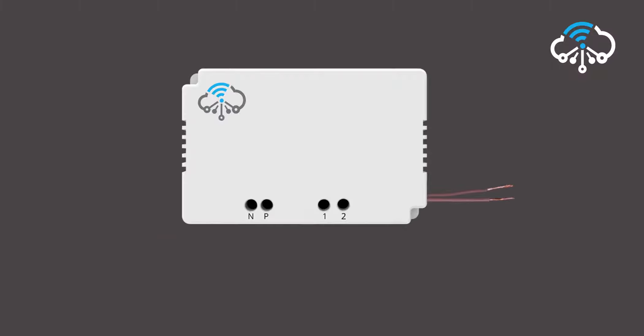On the device you can see the positions marked as N, P, and the numbered slots 1 and 2. N refers to the neutral point. P refers to the phase point. 1 and 2 is the load terminal where you will connect the load wires of the appliances.